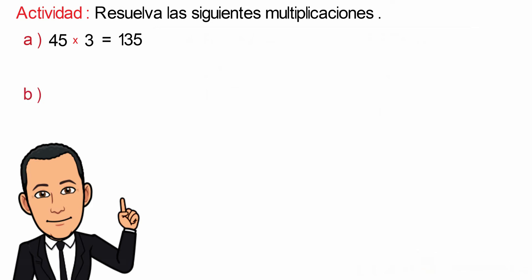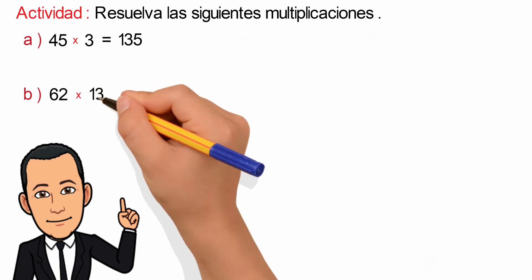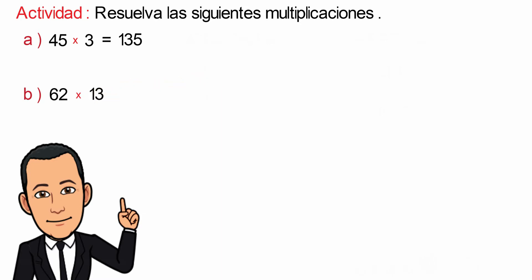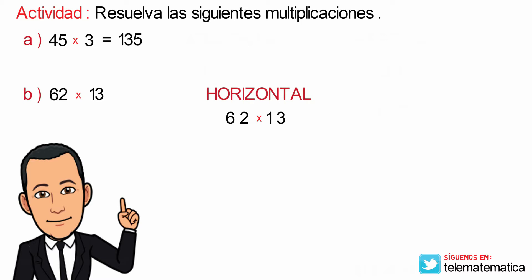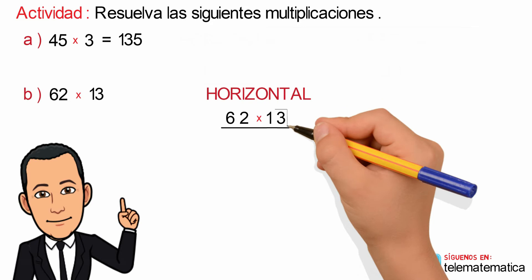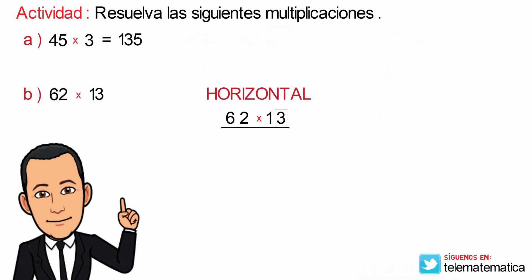Literal B: 62 multiplied by 13. Applying the procedure we already know, we will begin with the horizontal multiplication. We write the operation horizontally and solve, starting by multiplying the number 3, which corresponds to the unit, by the number 2, which also corresponds to the unit, giving us 6.